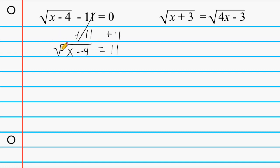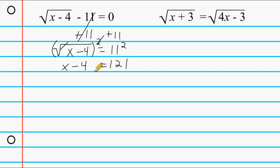Now we take everything that's underneath this radical and we square it. The square and the square root cancel each other out leaving us with x minus 4 on the left. We also have to square everything on the right hand side to balance our equation, and that is going to leave us with 121 on the right. Now we do the opposite of minus 4, which is adding 4 to the left and to the right. On the right hand side we have 125, and on the left we have just x remaining. So for this problem x is equal to 125.